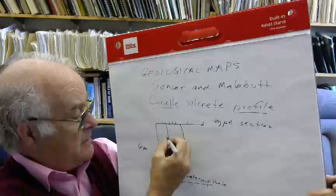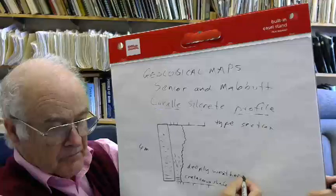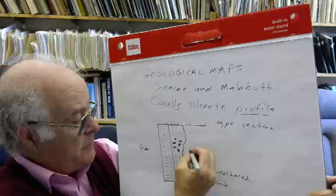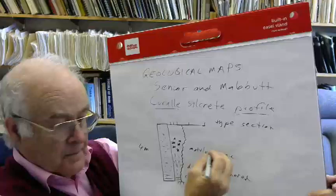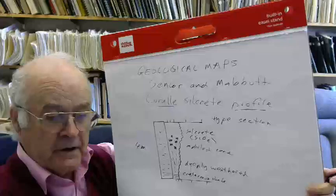Deeply weathered material here which is tending to be somewhat clay, and then sandy, deeply weathered, mottled, meaning it has spots of color, not uniformly colored, mottled, spots of red. And then silcrete. Basically a sand that is cemented with silica. Quite a thick sandy deposit that is absolutely firm with silcrete.